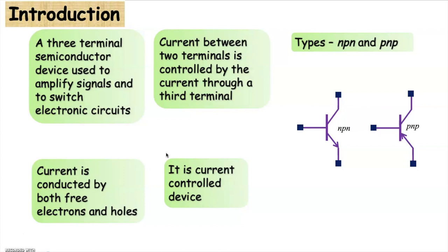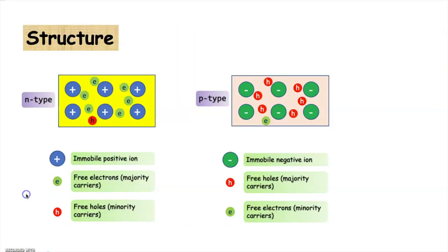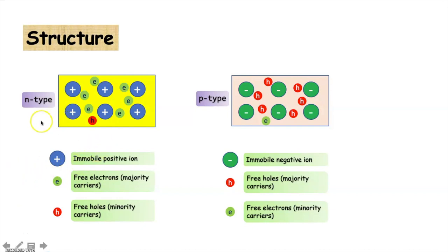There are two types of bipolar junction transistors: NPN and PNP. Before the discussion on the structure of bipolar junction transistors, let us very briefly review the structure of P-type and N-type semiconductors.